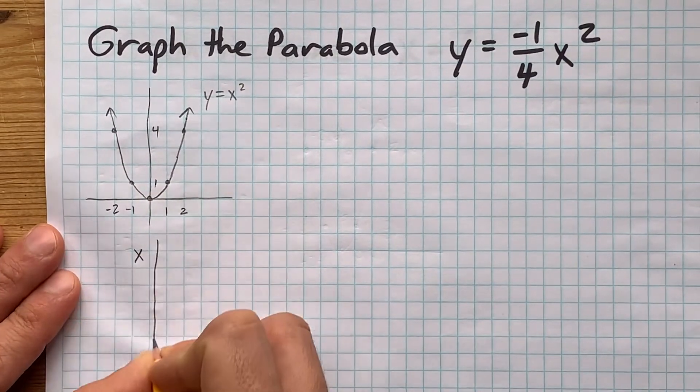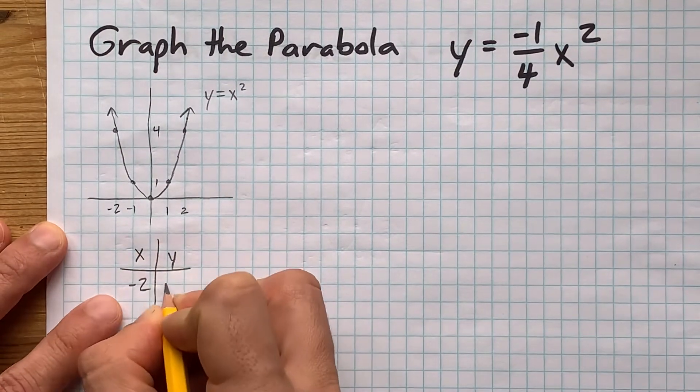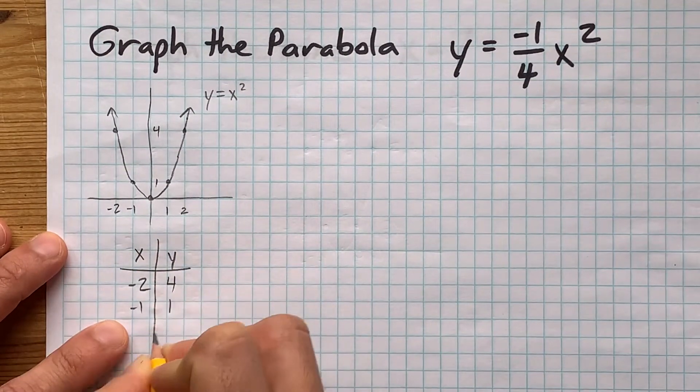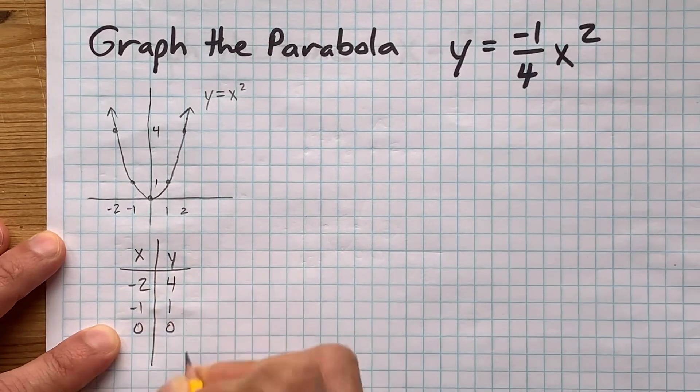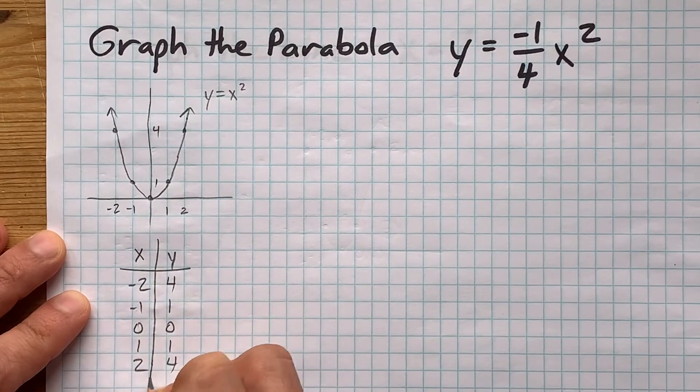Now I'm also going to write that here on a table of values, but it's literally the points I just called out to you written horizontally. Negative 2 comma 4, negative 1 comma 1, 0 comma 0, 1 comma 1, and 2 comma 4.